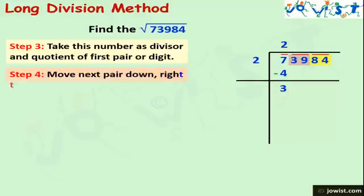We subtract 4 from 7 to get 3. The next step is to move the next pair down to the right of the remainder 3. Here we bring down 39. Remember, we always move digits down in pairs only. We now have 339 as our new dividend.